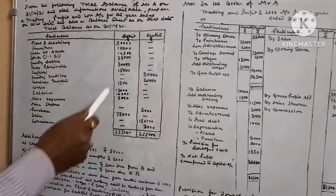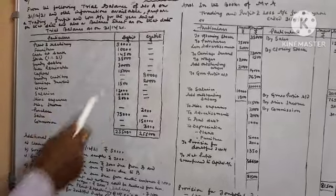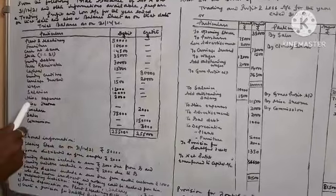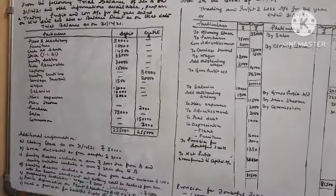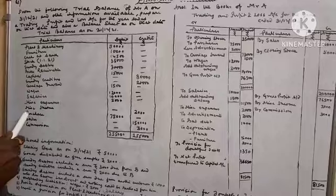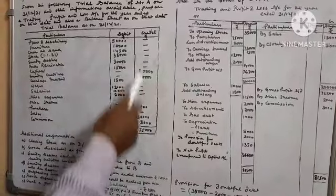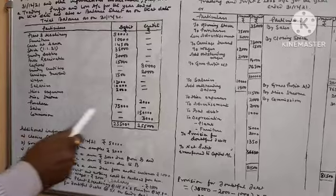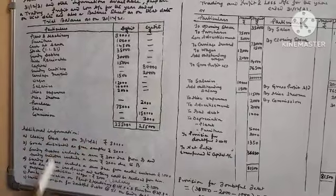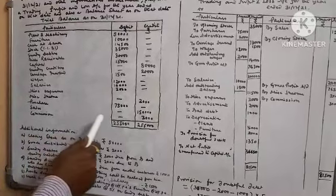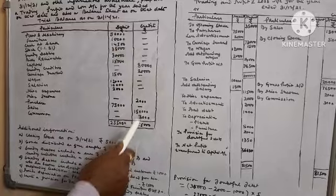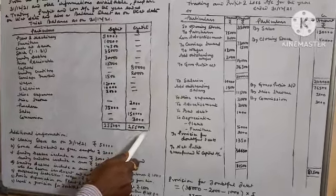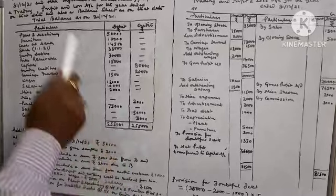Carriage inward 1,500 debit balance. Wages 12,000 debit balance. Salaries 10,000 debit balance. Miscellaneous expenses 2,000 debit balance. Miscellaneous income 2,000 credit balance. Purchases 75,000 debit balance. Sales 1,50,000 credit balance. Commission 3,000 credit balance. Total trial balance equals 2,55,000 both credit and debit sides.